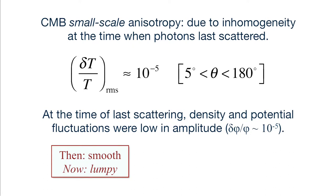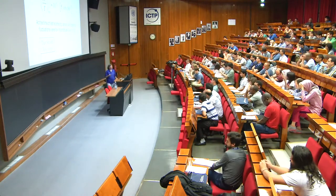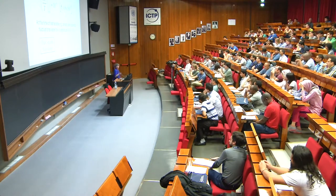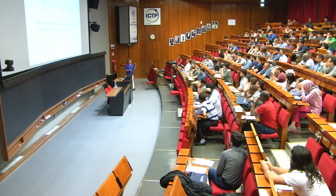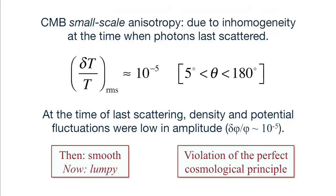Back then, the universe was very smooth — the only density perturbations were very low in amplitude. Today, the universe is very lumpy: it's got very dense lumps like stars and people, bigger slightly less dense lumps like galaxies, and structure on all scales. Your density is about 2 times 10 to the 30 times the average baryonic density of the universe. The story: then it was hot and dense, now it's cool and lower in density; then it was smooth, now it's lumpy. This is all badly in violation of the perfect cosmological principle, and the cosmic microwave background provides very strong evidence that the universe is in fact evolving with time.